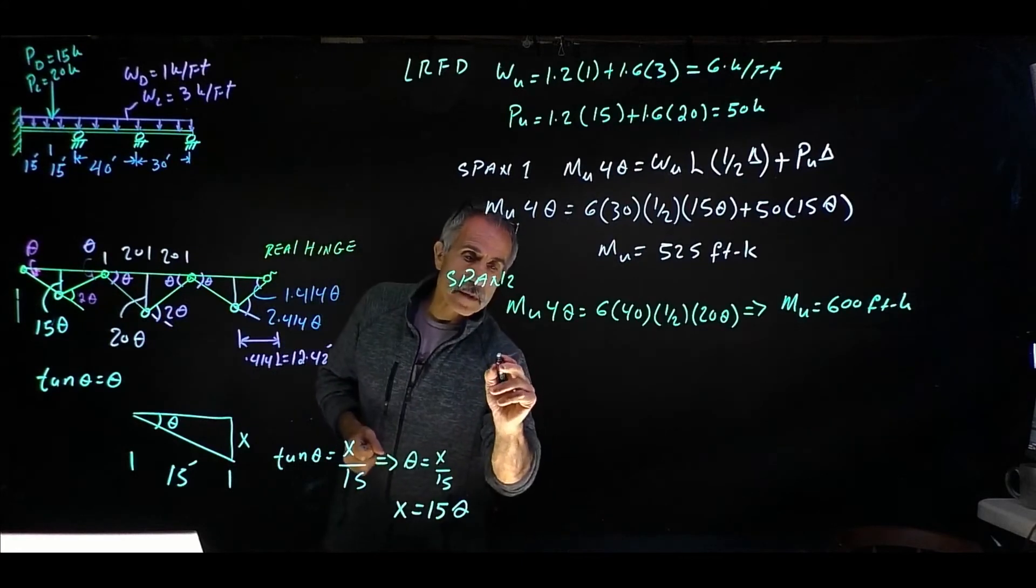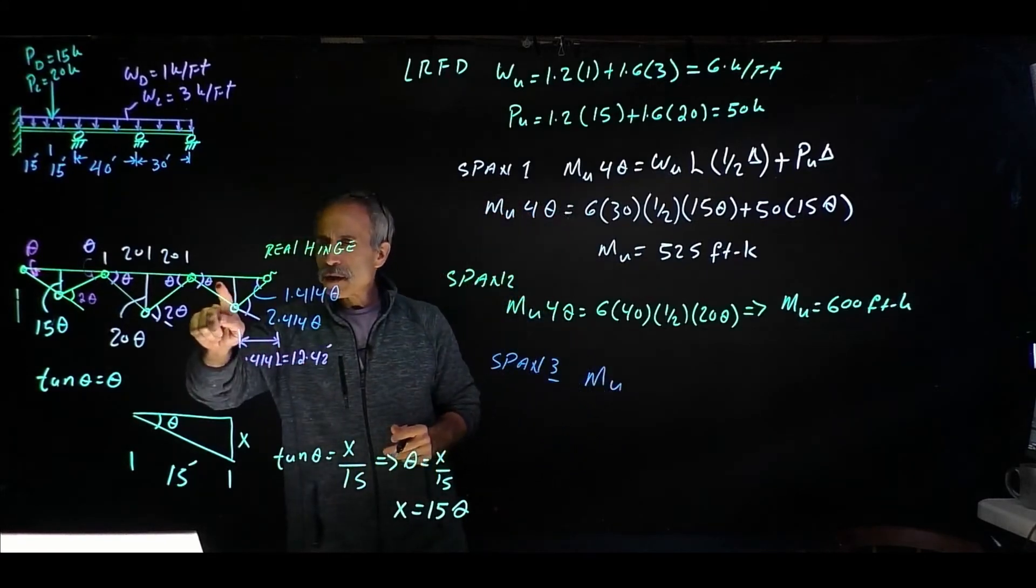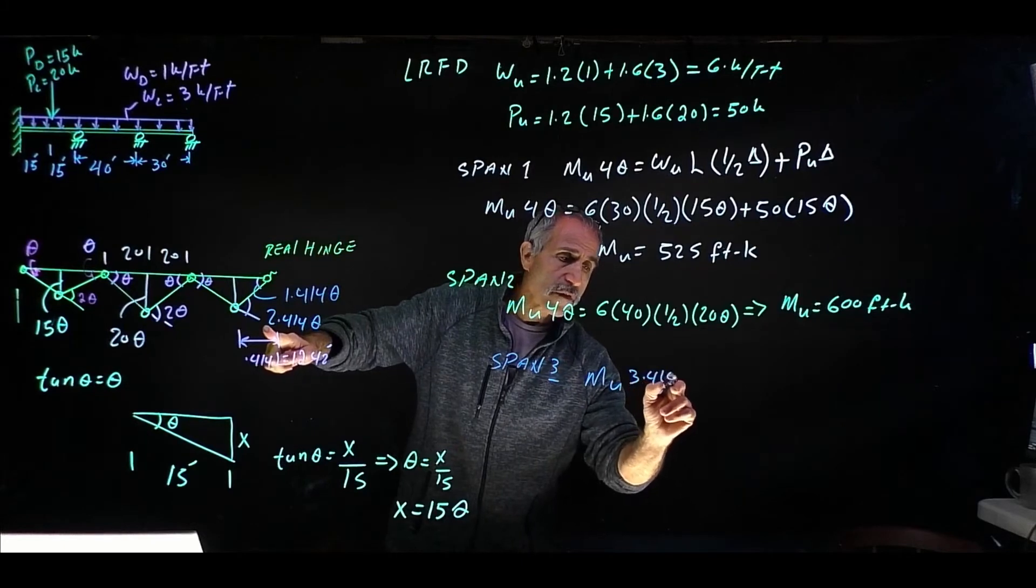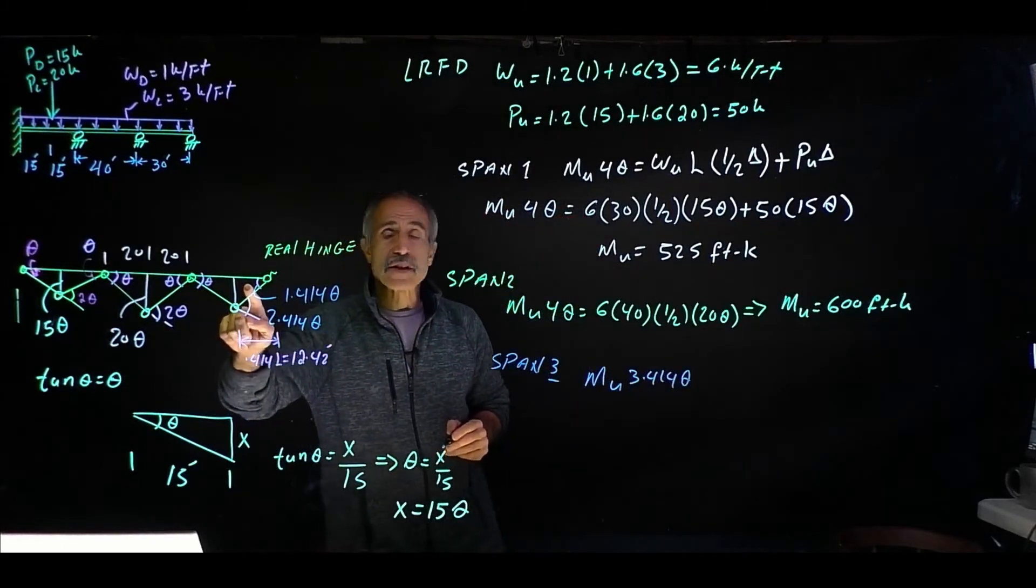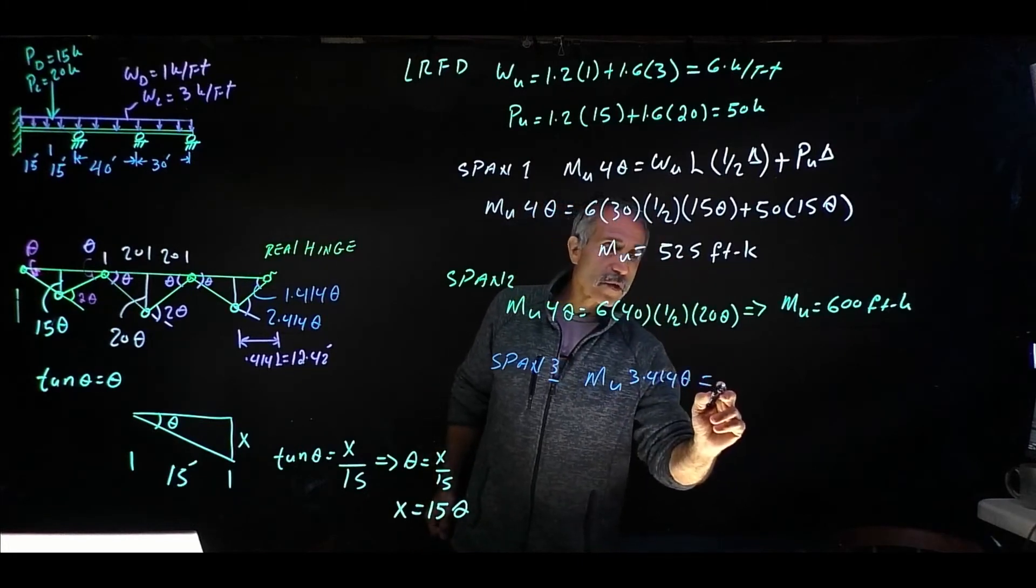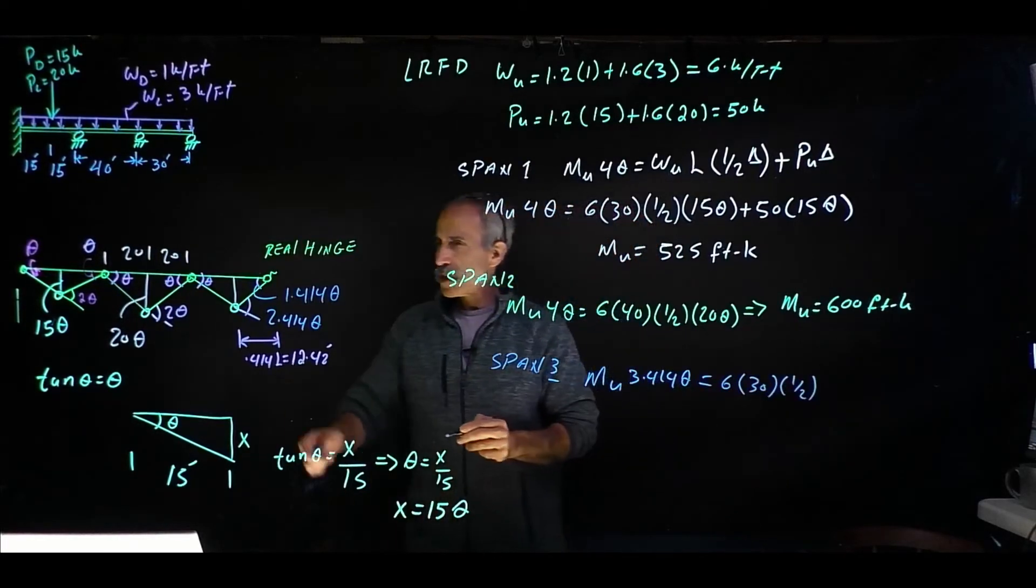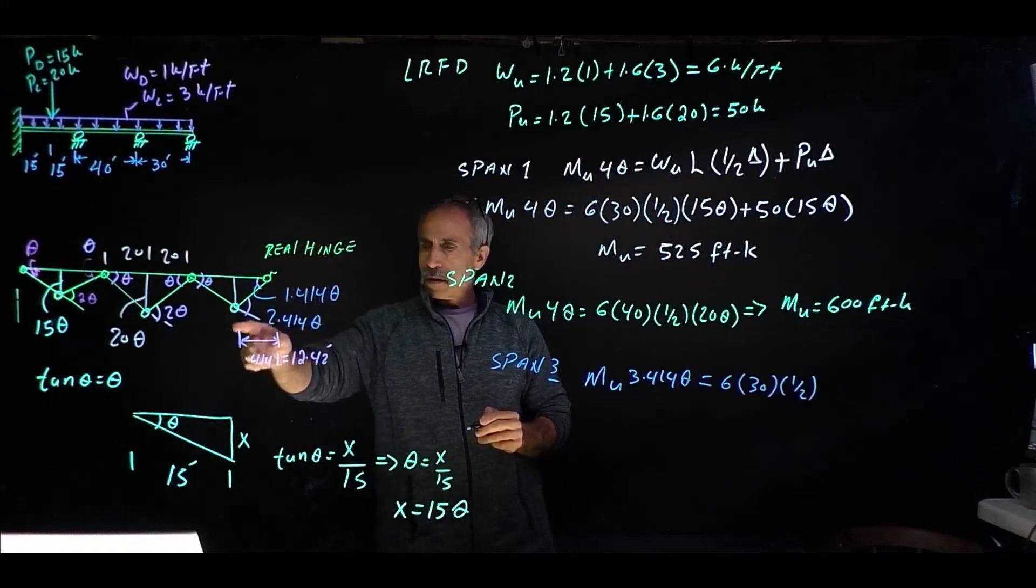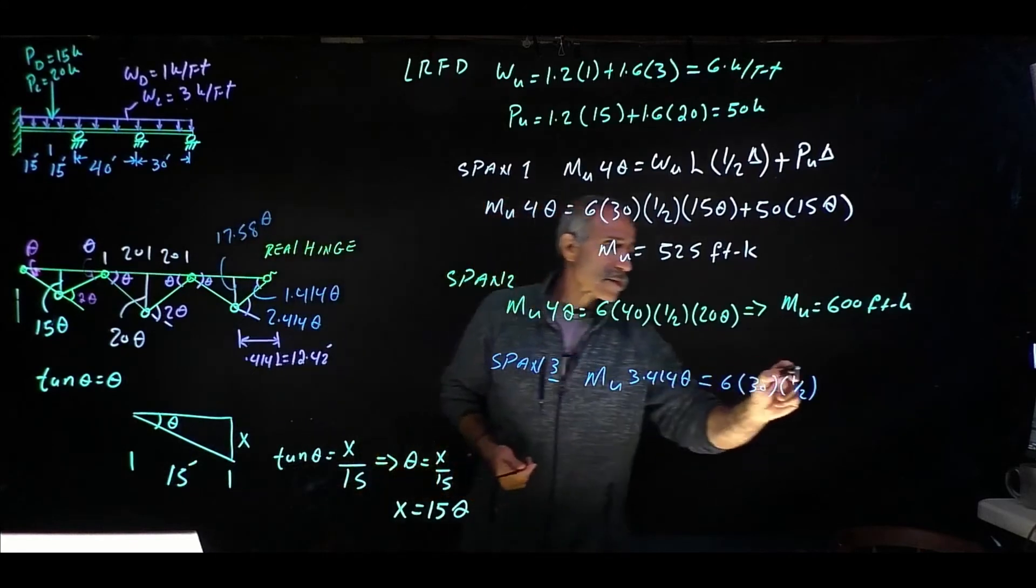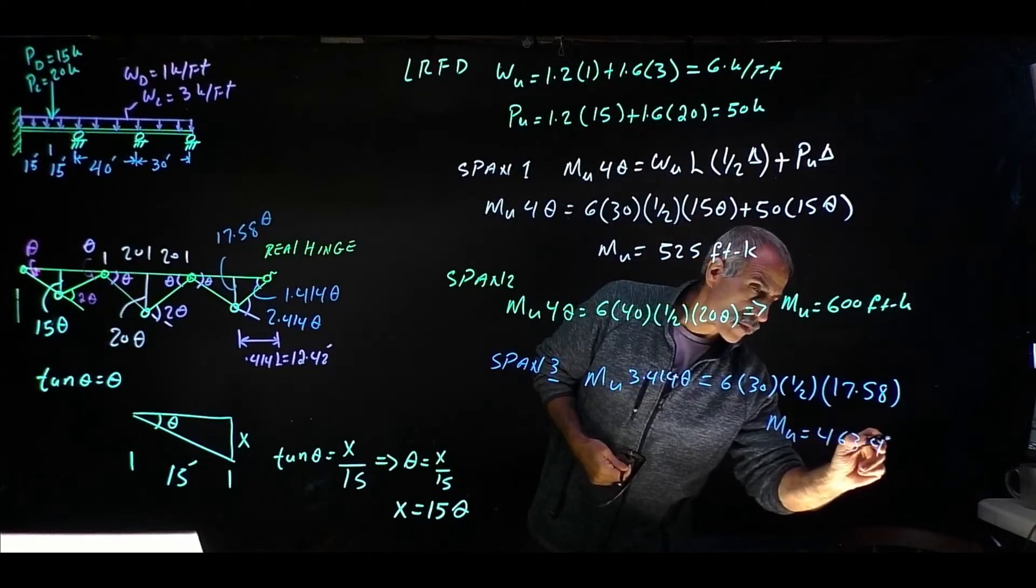Now we're going to go to the last span, which is span number 3. And we have MU times 1 theta plus 2.414 makes it 3.414, 3.414 theta. Why didn't I add this one? Because this one is a real hinge. And it's in the end, so it's a real hinge. We leave it be. So that's equal WU came out to 6 times 30 times one half, and the average deflection came out to be, this was 17.58 theta. Remember we erased it? So times 17.58 and therefore MU comes out to 463.4 kip foot.